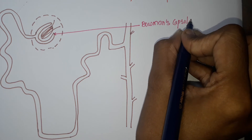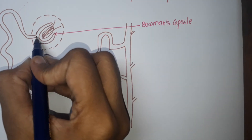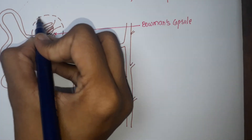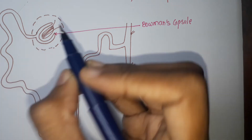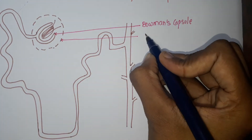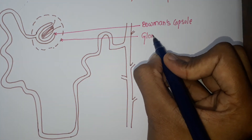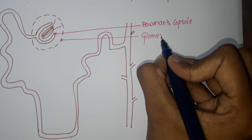Then moving from Bowman's capsule, this is the glomerulus.